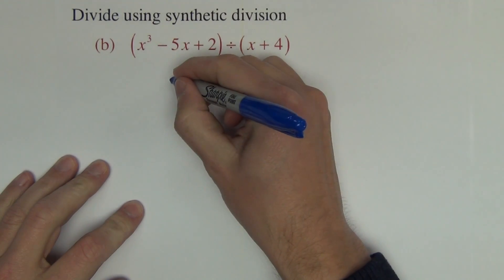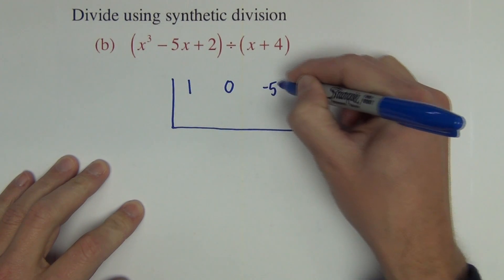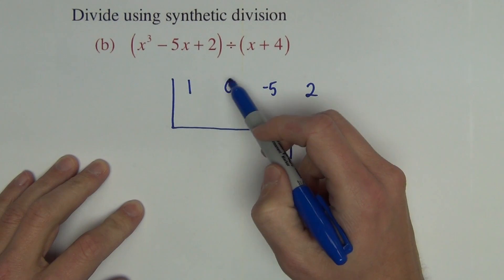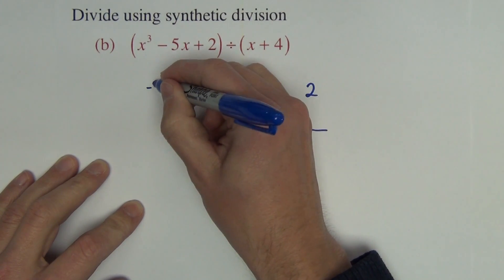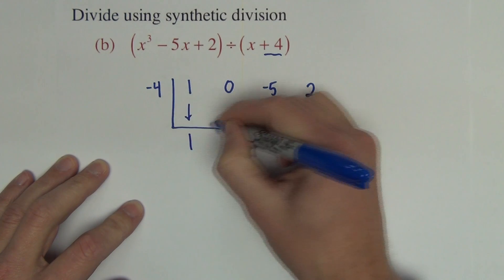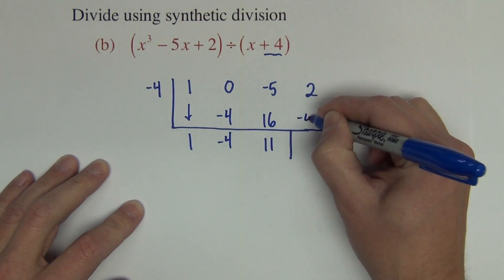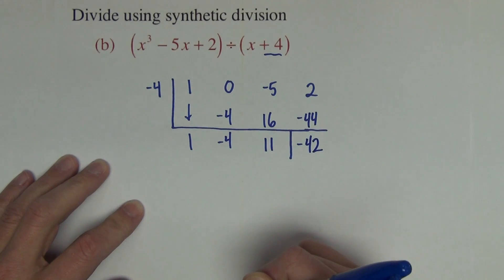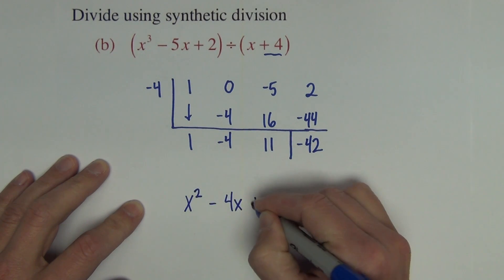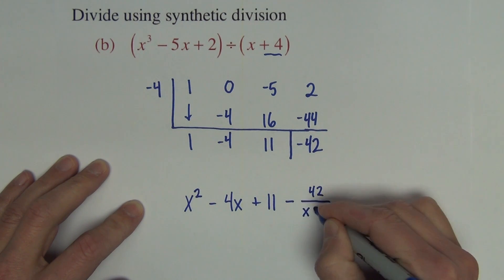Next problem — we set up again, looking for any zeros or missing terms. Be careful about that on the final: both examples shown have had missing terms. We divide by negative 4, which is the zero of the divisor. We bring down the first term, multiply, add, multiply, add, multiply, add to complete the synthetic division. Putting powers of x back in, dropping by 1, gives x squared minus 4x plus 11, and since the remainder is negative, we write minus 42 divided by x plus 4.